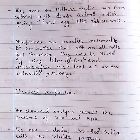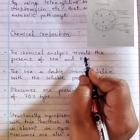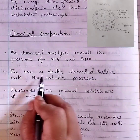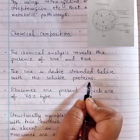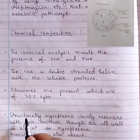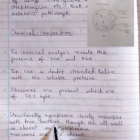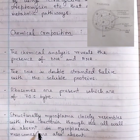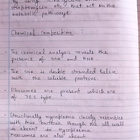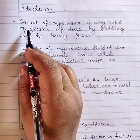The chemical composition of mycoplasma: chemical analysis reveals the presence of DNA and RNA. The DNA is double-stranded helix with soluble proteins. Ribosomes are present, which are of the 70S type. Structurally, mycoplasma closely resembles true bacteria, though the cell wall is absent.